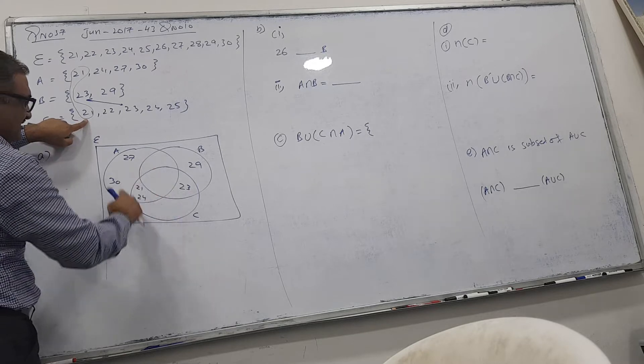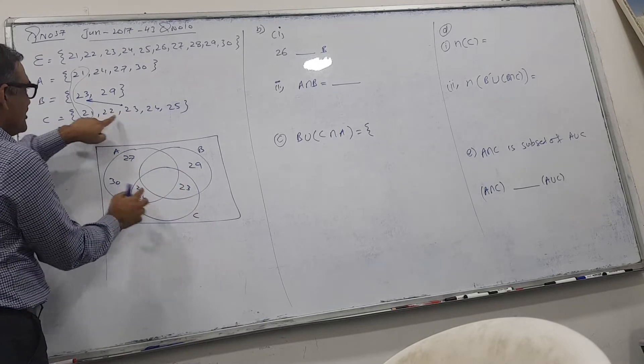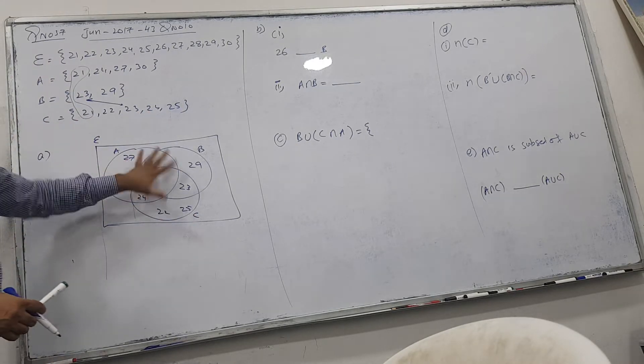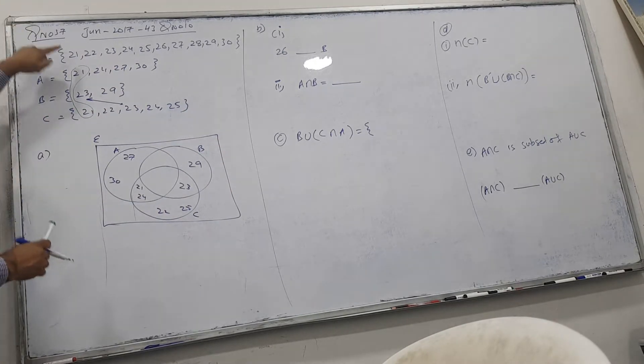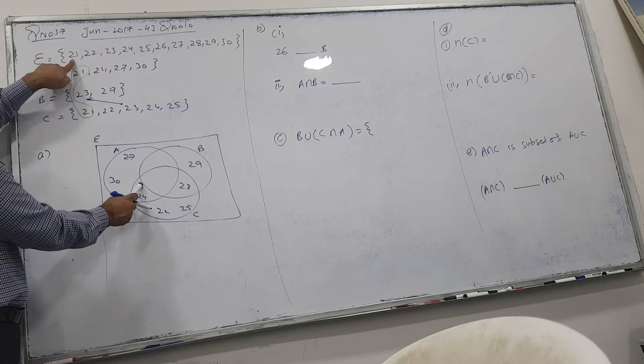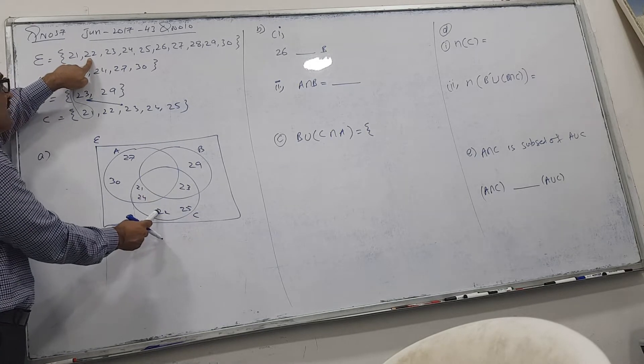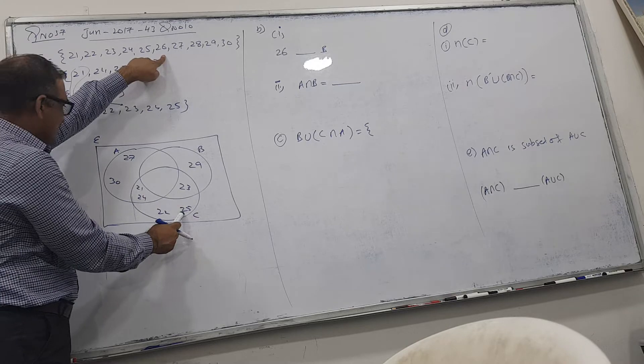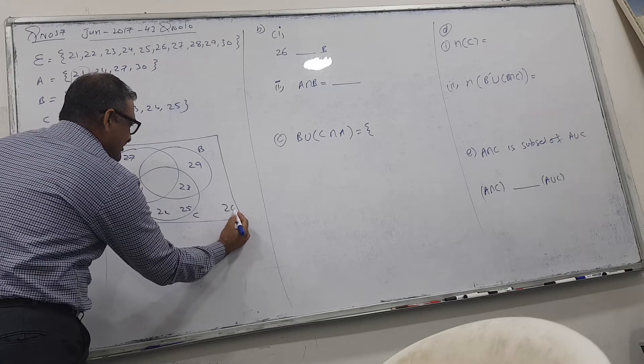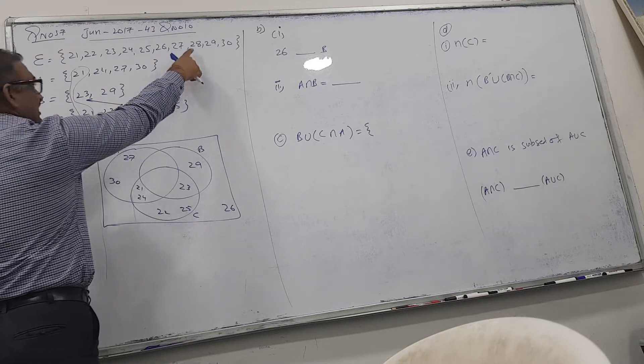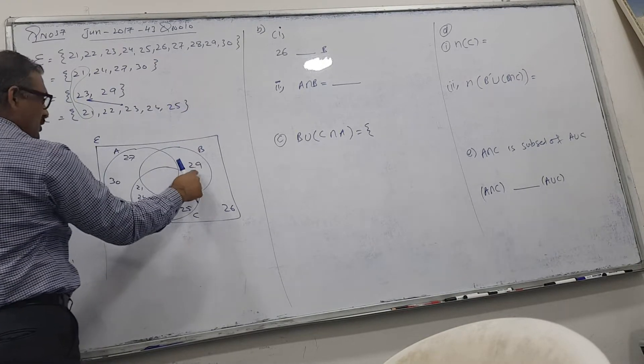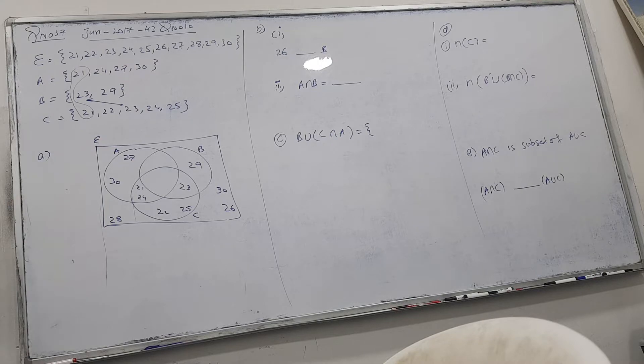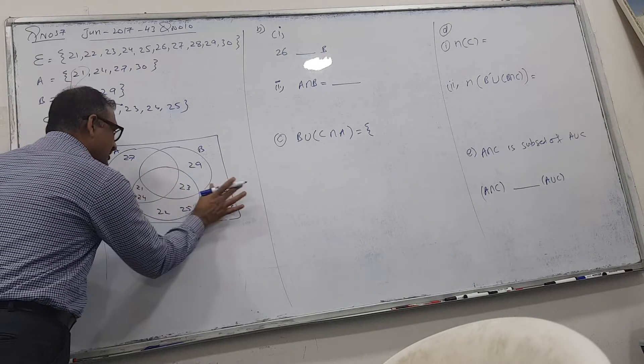21 is over, 24 is over, so 2 left. I have to fill 27 here, 30 here. A is over, B is over. Talk about C now. 21 over, 24 over already in C, 23. So 2 left: 22 left and 25 left. Finished. Now after filling all circles, I will talk about outside. Check: 26 not, 26 outside. 27 over. 28 I am writing outside. 29 over. 30 over.